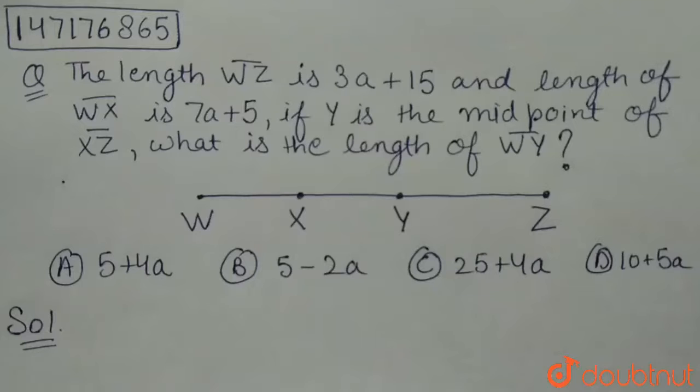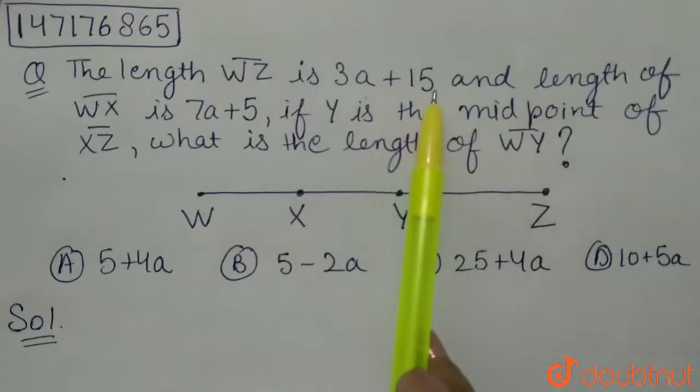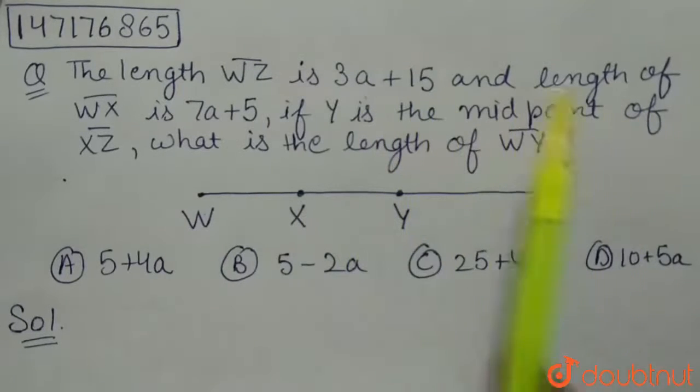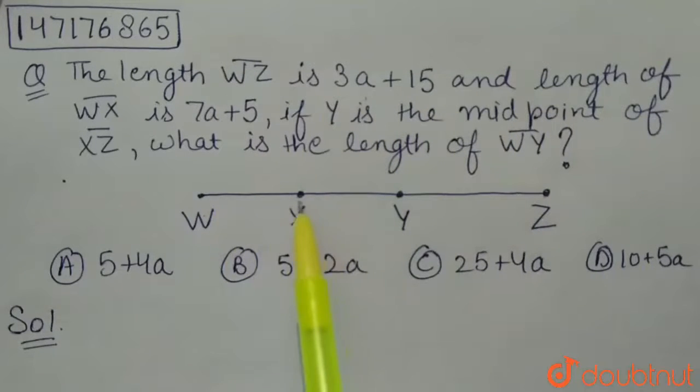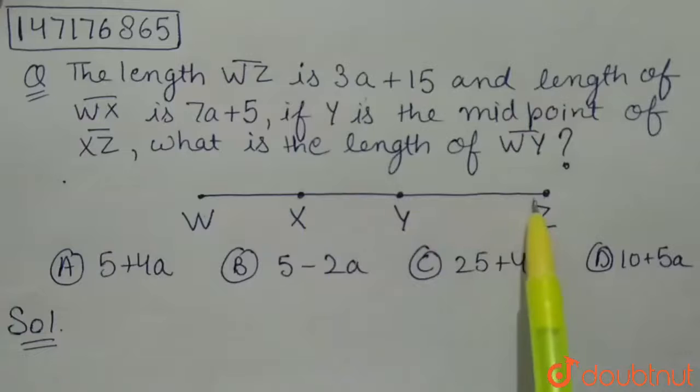The question given is, we have been given a line segment WZ, whose length is 3a plus 15. And length of the line segment WX is 7a plus 5. And if Y is the midpoint of the line XZ, what is the length of WY?